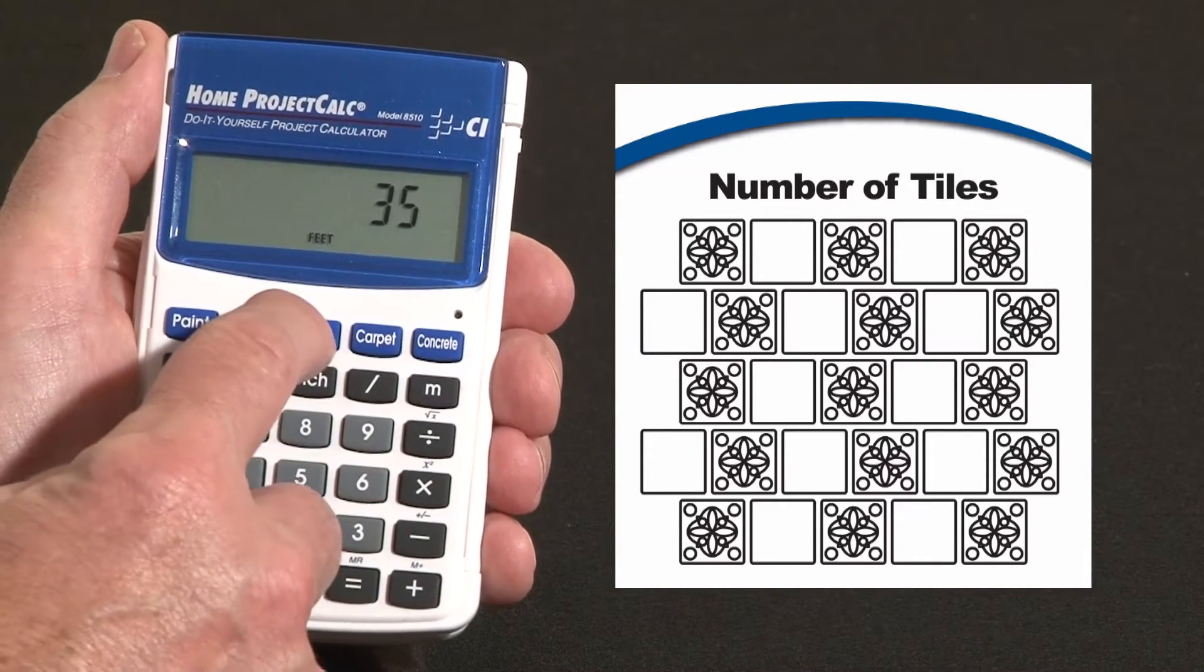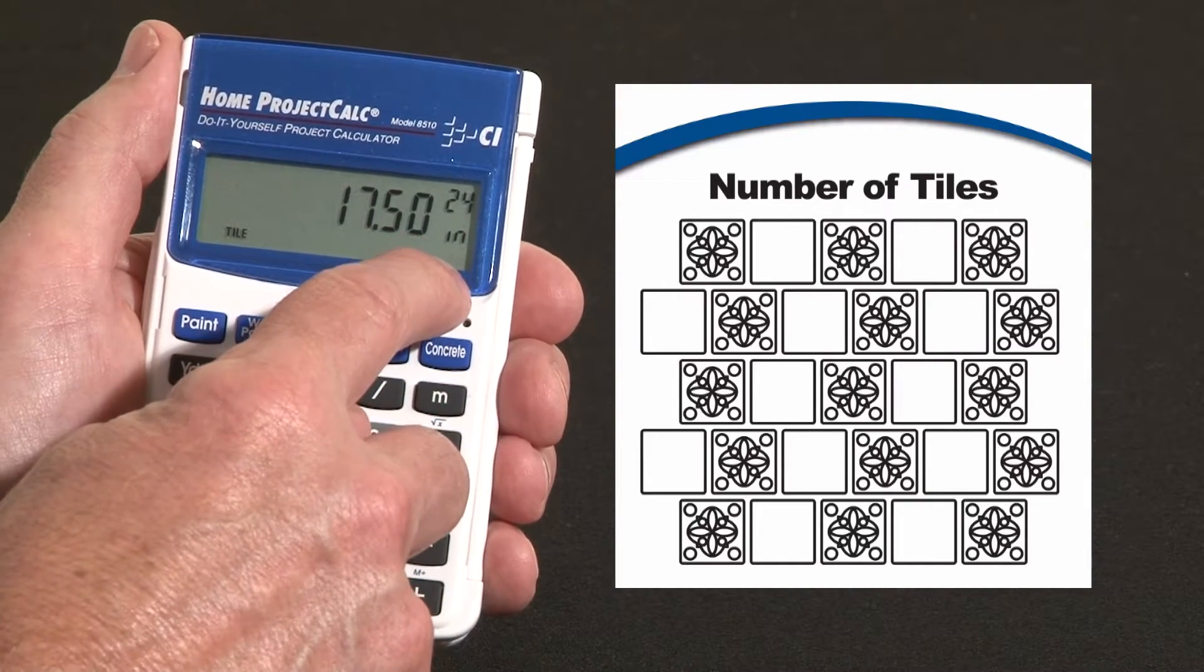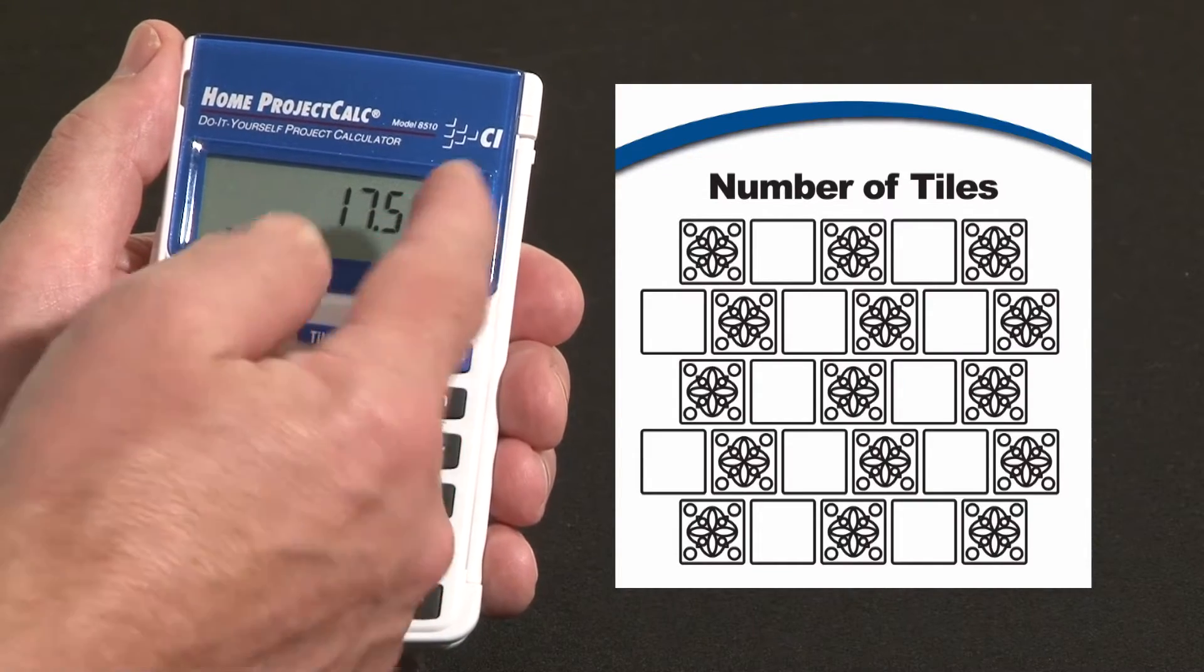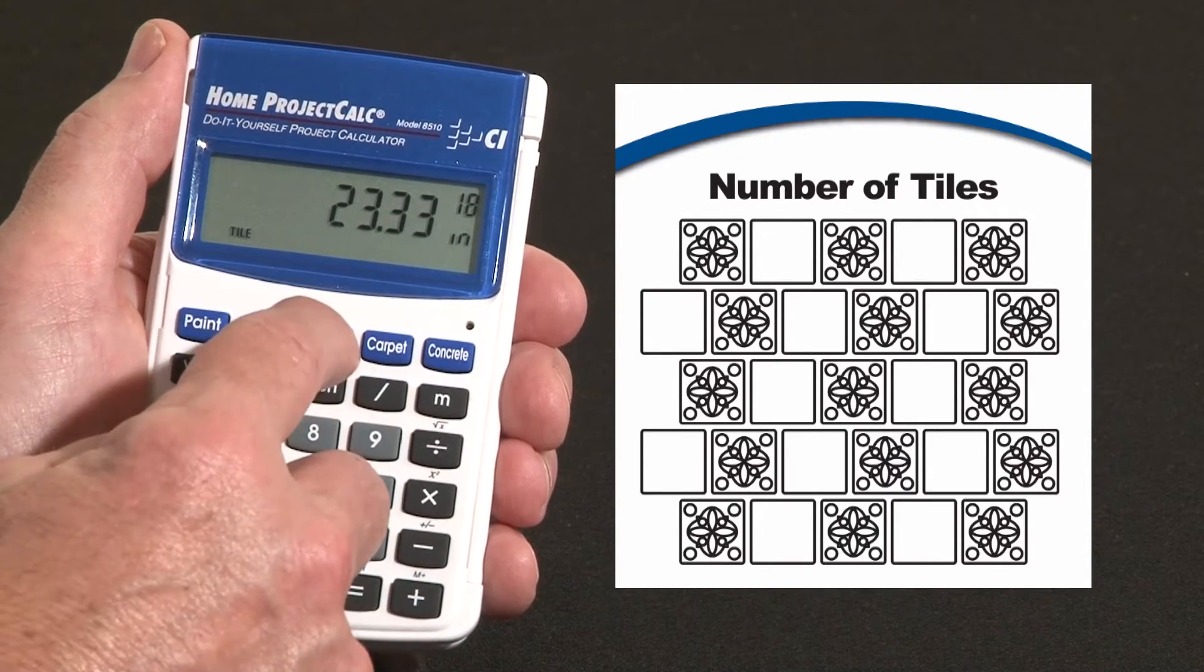35 feet and I just hit tile and it tells me for a 24 by 24 inch tile I'd need 17.5 or 18 tiles. For an 18 inch tile we'd need 23.3, call it 24.